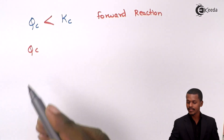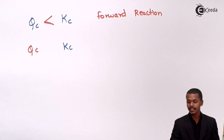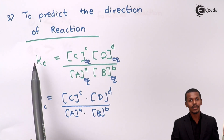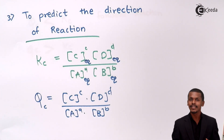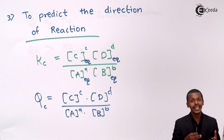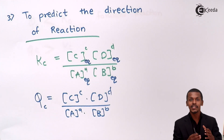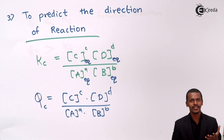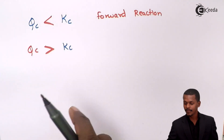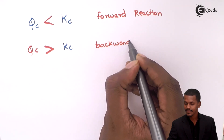What if Qc is greater than Kc? In that case, the concentration of reactants A and B is less, while the concentration of products is more. Since product concentration is high, it is favorable for the backward reaction. The rate of the backward reaction will be greater, so the reaction will proceed in the backward direction.